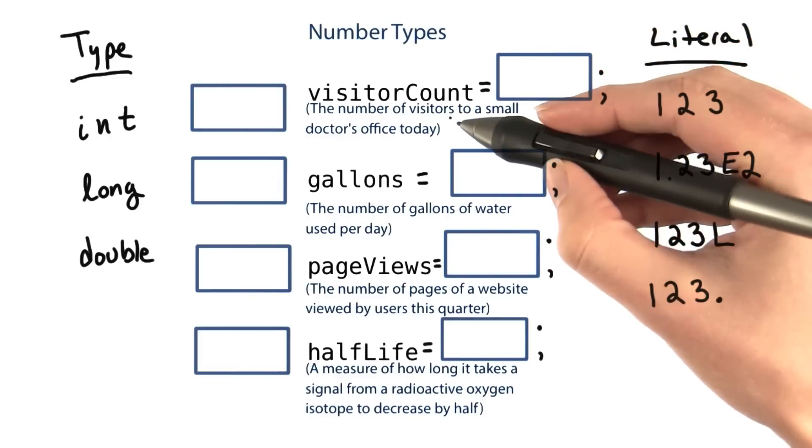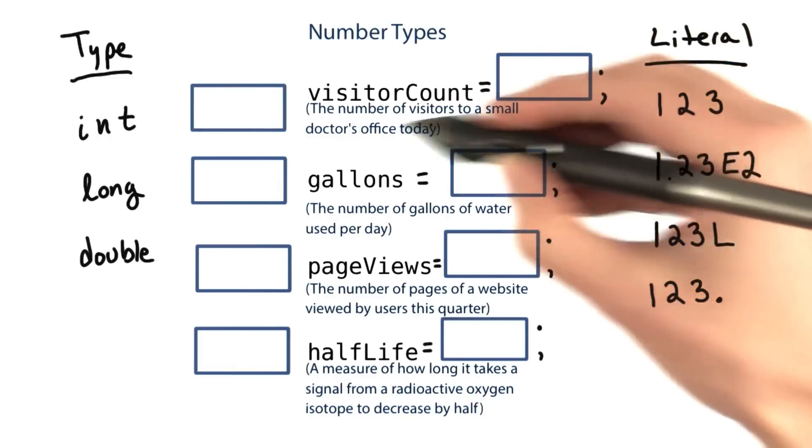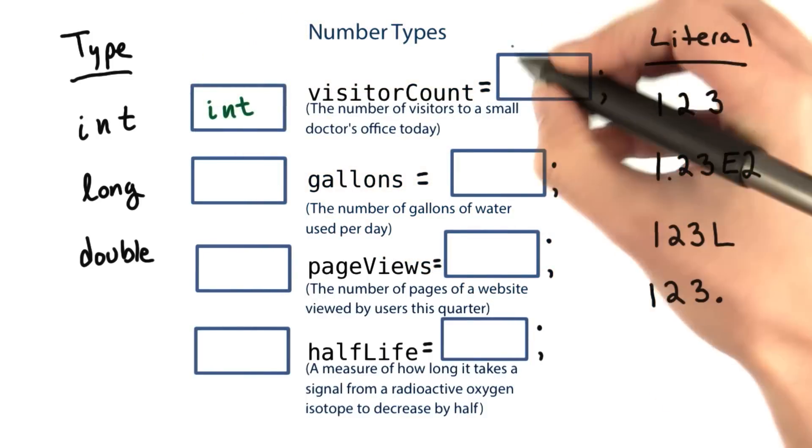The visitor count for a small doctor's office today would be relatively small. So we can probably get away with an int. And we would write that as 123.